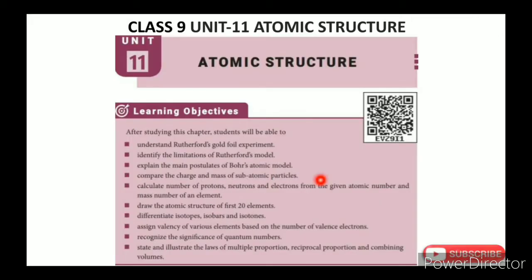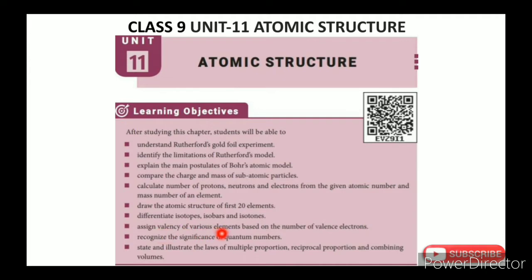In this lesson, the learning objectives are: understand Rutherford's Gold Foil Experiment; identify the limitations of Rutherford's model; explain the main postulates of Bohr's atomic model; compare the charge and mass of subatomic particles; calculate number of protons, neutrons and electrons from the given atomic number and mass number of an element; draw the atomic structure of the first 20 elements; differentiate isotopes, isobars, isotones; assign valency of various elements based on the number of valence electrons; recognize the significance of quantum numbers; state and illustrate the laws of multiple proportion, reciprocal proportion and combining volumes.